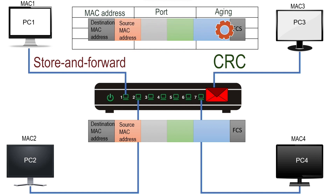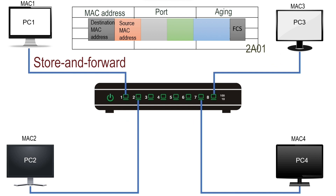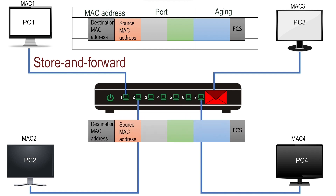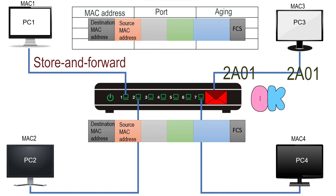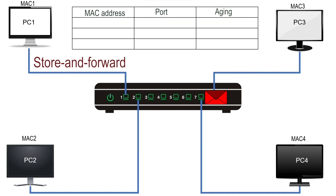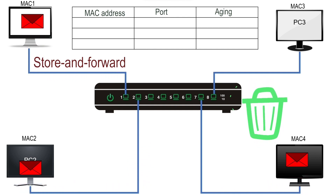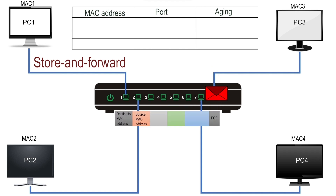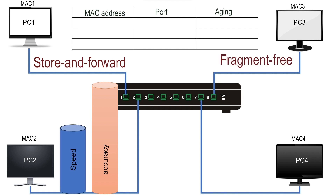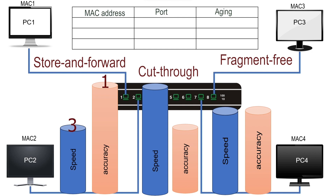After creating a frame, the source device runs the cyclic redundancy check algorithm on it. The value produced by this algorithm is the CRC value, which is stored in the FCS field. The sender device then loads the frame on the media. Upon receiving the frame, the destination device runs the CRC algorithm and compares the result with the CRC value in the FCS field. If they match, the frame is error-free; if not, the frame is considered damaged. In the store-and-forward method, the switch pulls the complete frame, runs the CRC algorithm, and forwards the frame only if both results match. This method provides the highest accuracy but at the cost of speed — it ranks first in accuracy and last in speed among the three methods.